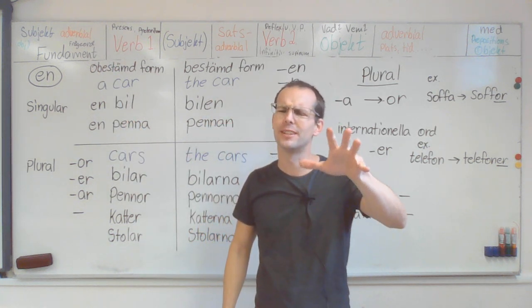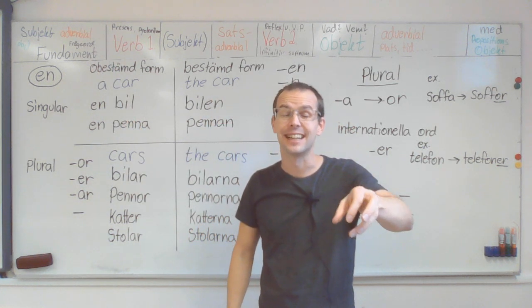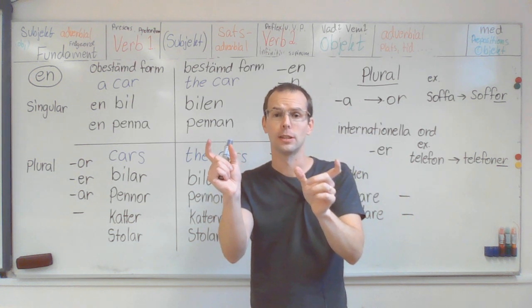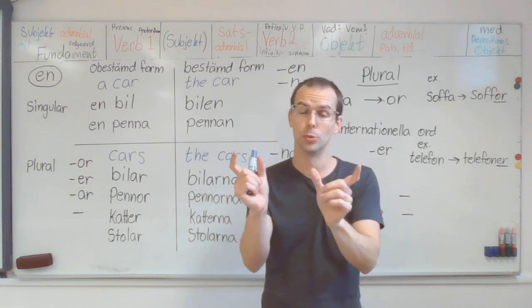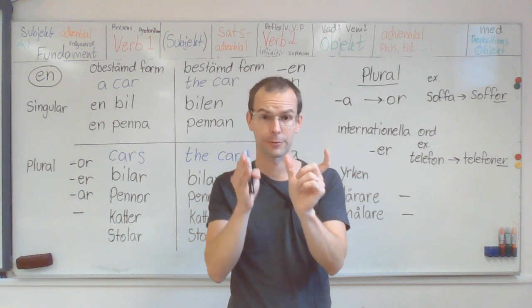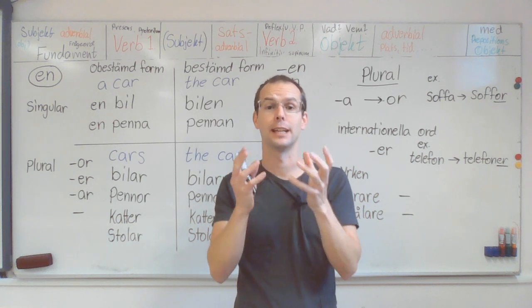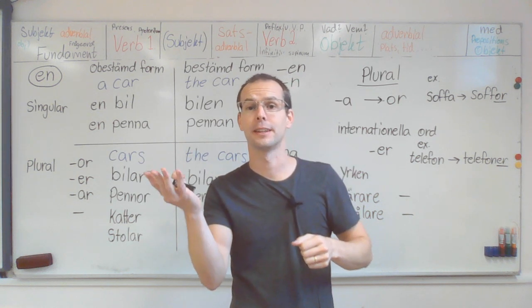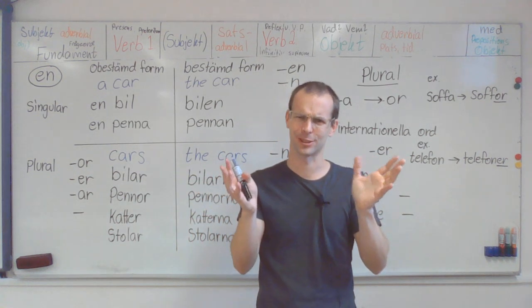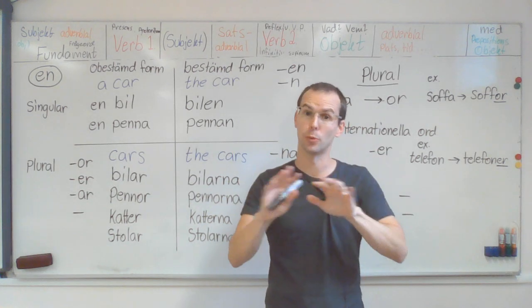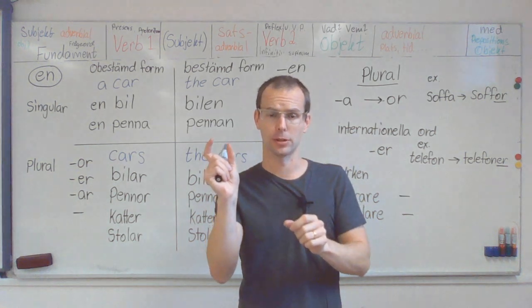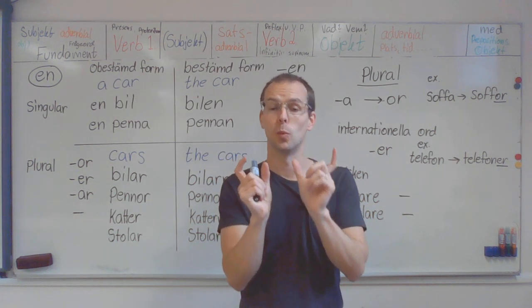The problem with the articles is that you have to learn which article belongs to which noun. So every noun has a specific article and it's either en or ett, and this you have to learn. There are no rules. You basically have to learn which article goes with which noun.